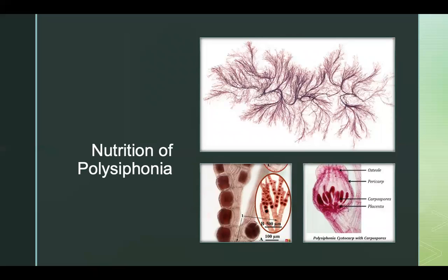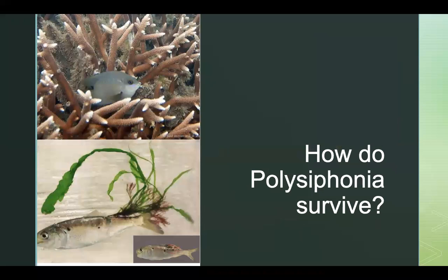Polysiphonia does not have a digestive system. This red algae depends on photosynthesis to produce food. Polysiphonia can survive deeper in the water due to its ability to absorb longer light waves, receiving nutrients that way. Comparing the two, the perch has a digestive system whereas Polysiphonia does not, which causes differences in digestion and nutrition between the two organisms.